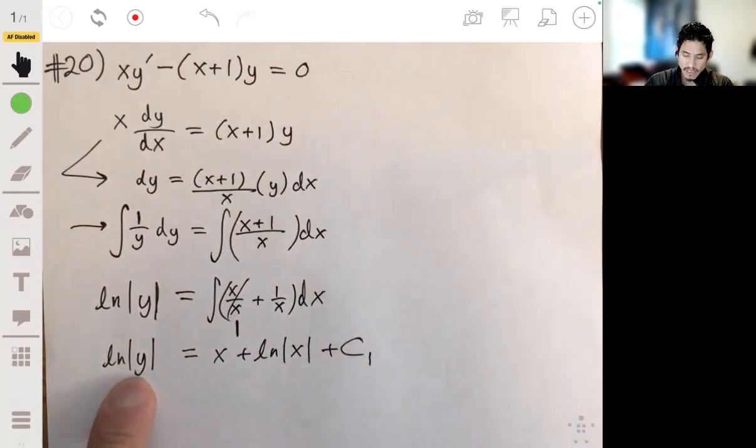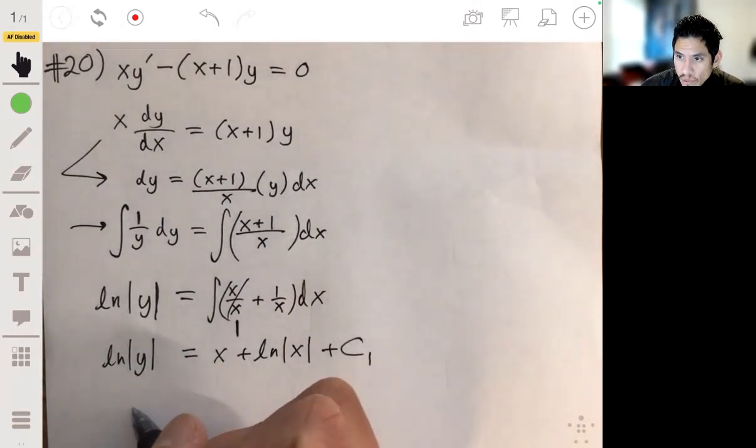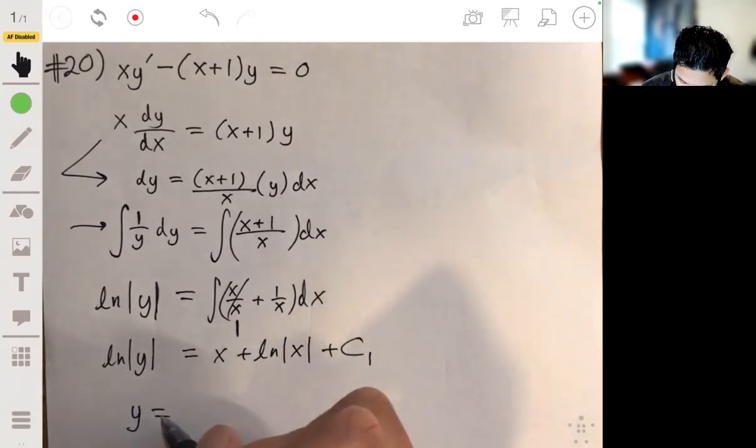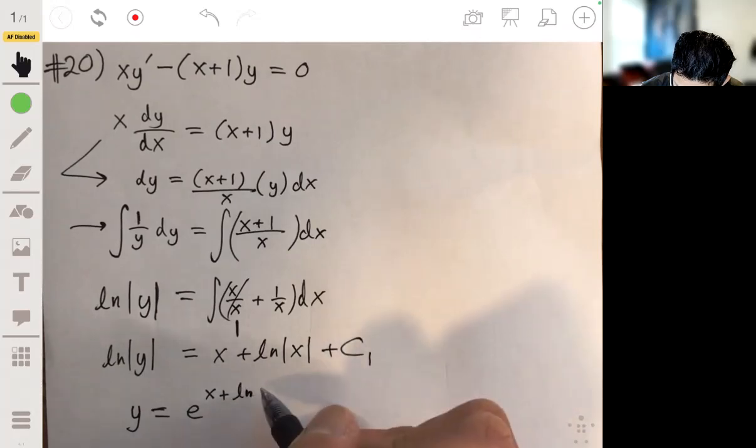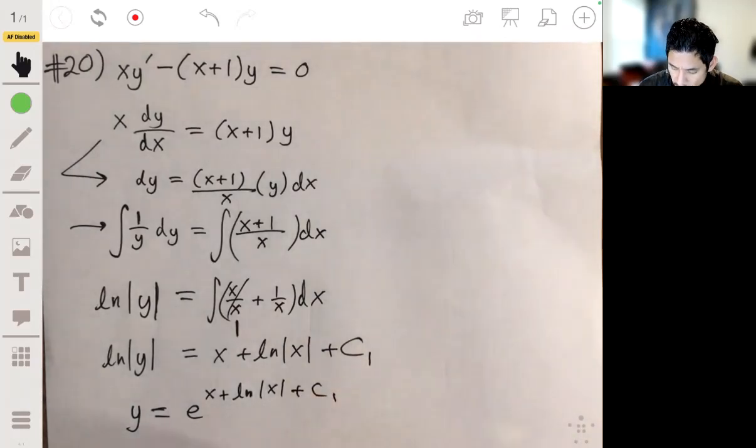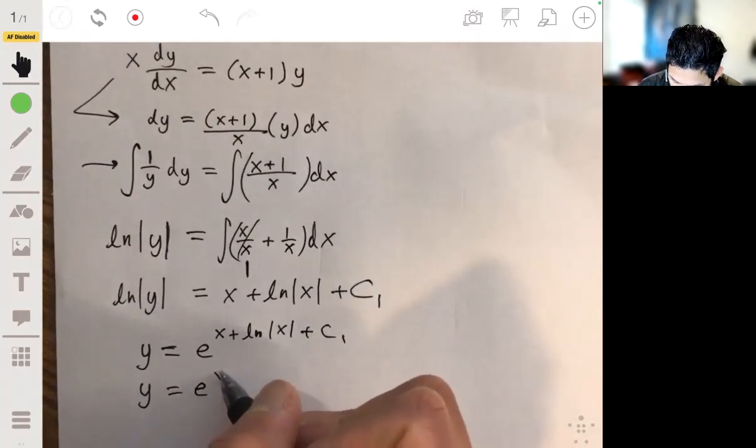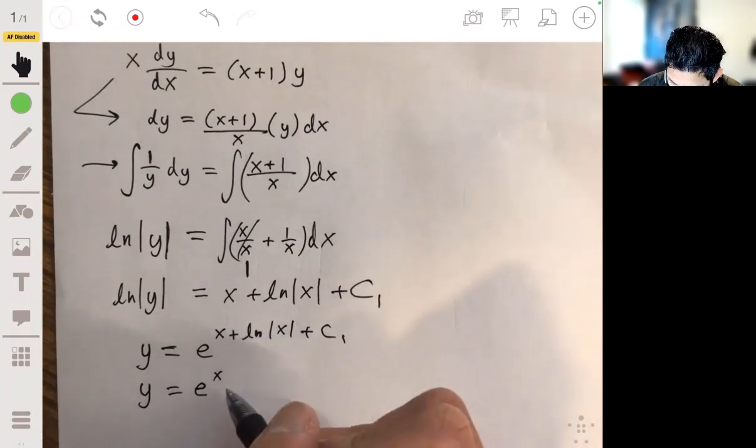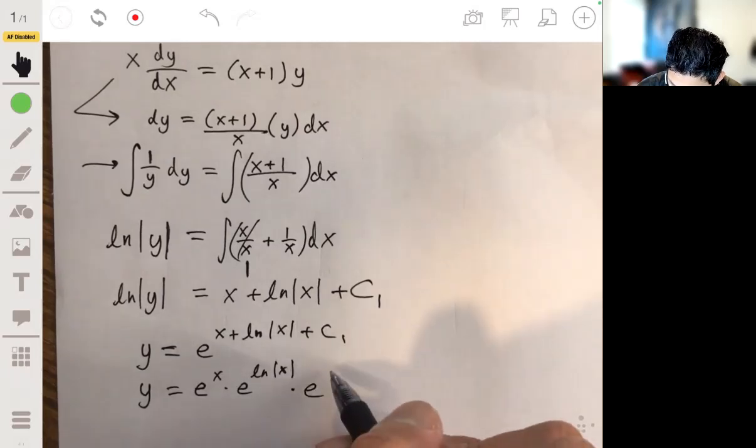And now we just take e, raise it to this whole group. So we'll get basically y being equal to e to the x plus natural log of x plus c1. Breaking this up as the power properties, y equals e to the x times e to the natural log of the absolute value of x times e to the c1.